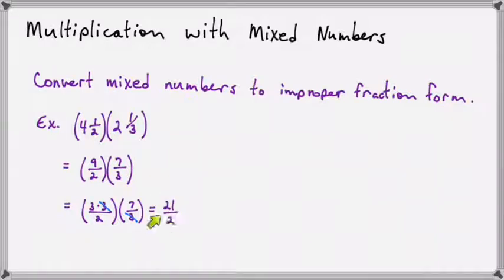Now this is the answer, but it's not in the final form that we need it in. This was a mixed number problem. So if the answer is an improper fraction, we need to convert it to mixed number form. So two goes into 21 ten times with one left over. So 21 halves becomes 10 and one half.